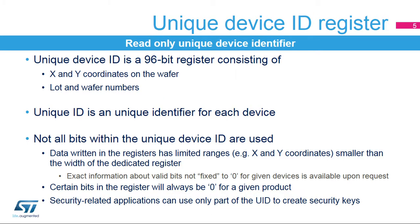The unique device identifier is a 96-bit register that contains the coordinates of the die on the wafer, lot number, and wafer number. This identifier is unique for each device manufactured by ST. As each record within the unique identifier has a given range, like the X and Y coordinates, not all the bits in the device ID are used. This is important for security-related purposes, where the number of bits used is an important parameter.